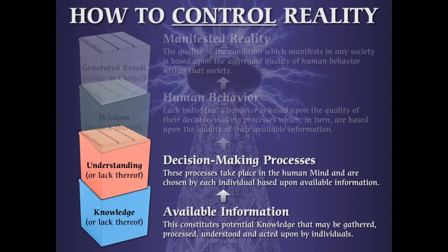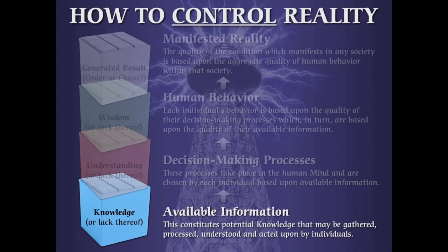Can you control it from people's decision-making processes, meaning from the level of mind? Yes, you absolutely can. But that's actually more difficult because you have to go to each individual and try to change the way that they think. Instead, the most effective way to control reality is to control it from the base level of available information, because that's the level all the other manifested realities are built upon. So if you can control that, you control the whole game — you control behavior, and therefore you control the outcome.